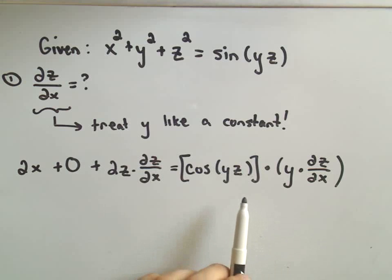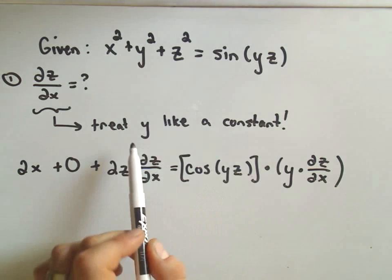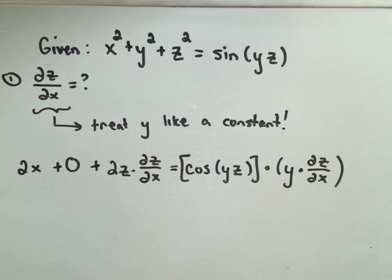So I think the main thing to kind of keep track when you're doing all these partial derivatives is really just which ones are you treating like constants and which ones are you not treating like constants.